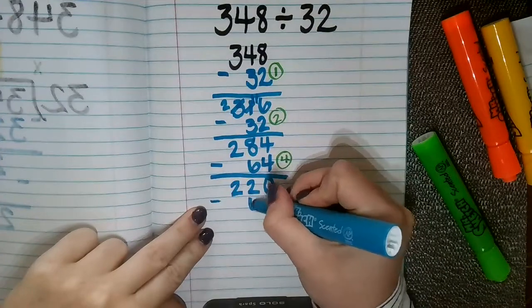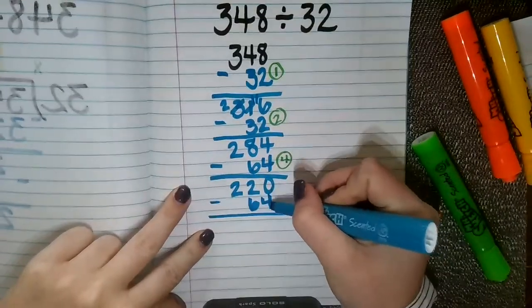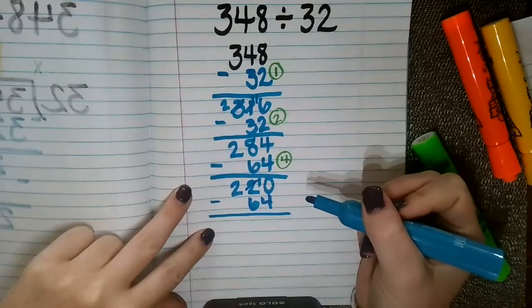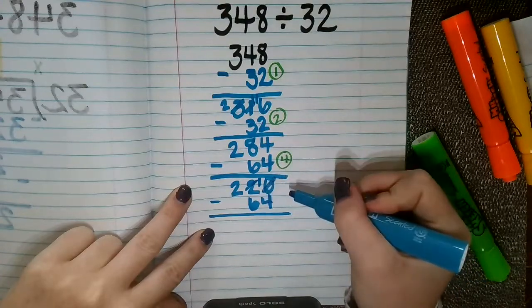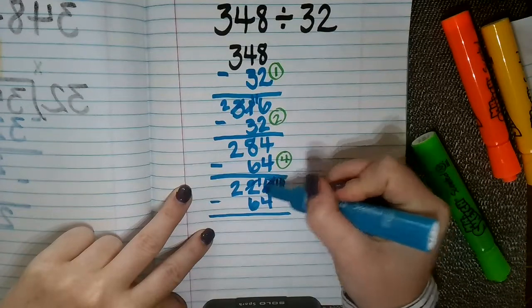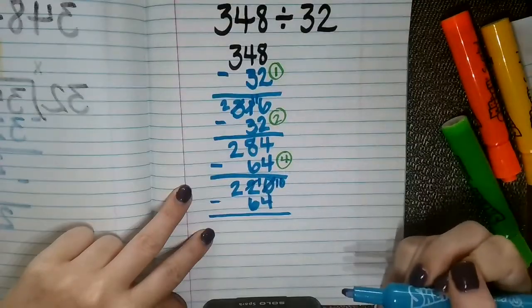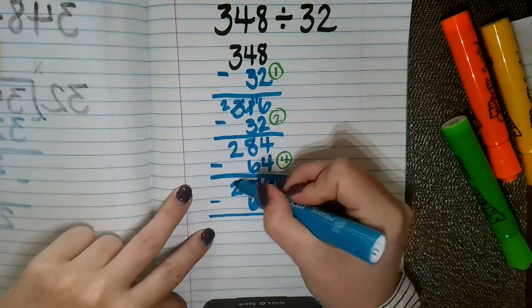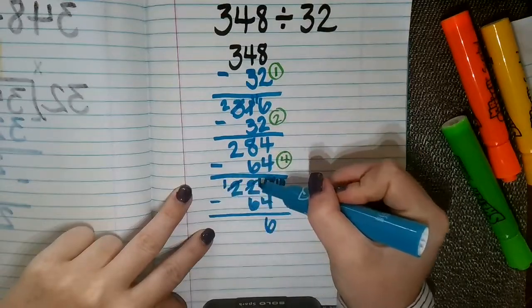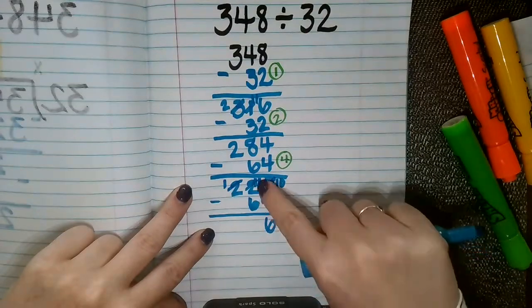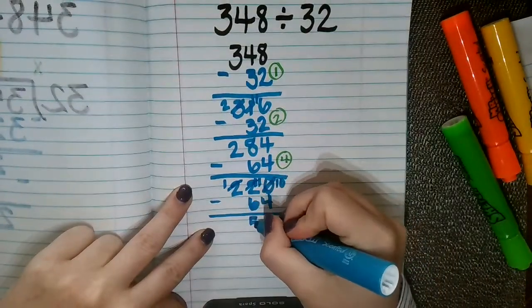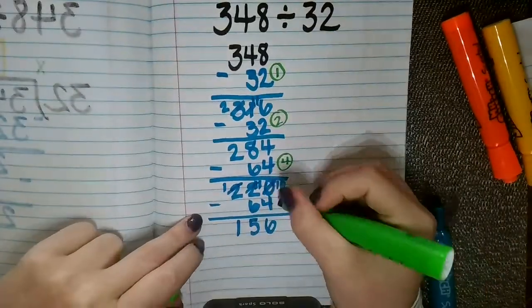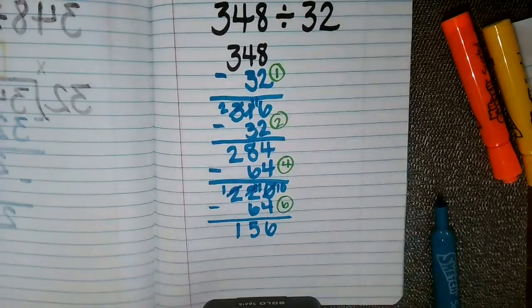So if I take another 64 away, 0 minus 4 I cannot do that. I'm going to go to my next largest place value and make that 2 into a 1, giving my ones place here, making that a 10 because I took a 10 from my tens place and gave it to my ones place. 10 minus 4 is 6. 1 minus 6 I can't do, so I'm going to take a 10 from my next largest place value and give that to my tens place, so now I have 11 minus 6 which is 5. 1 minus nothing is 1. So that is now 6 groups of 32 I have taken away.